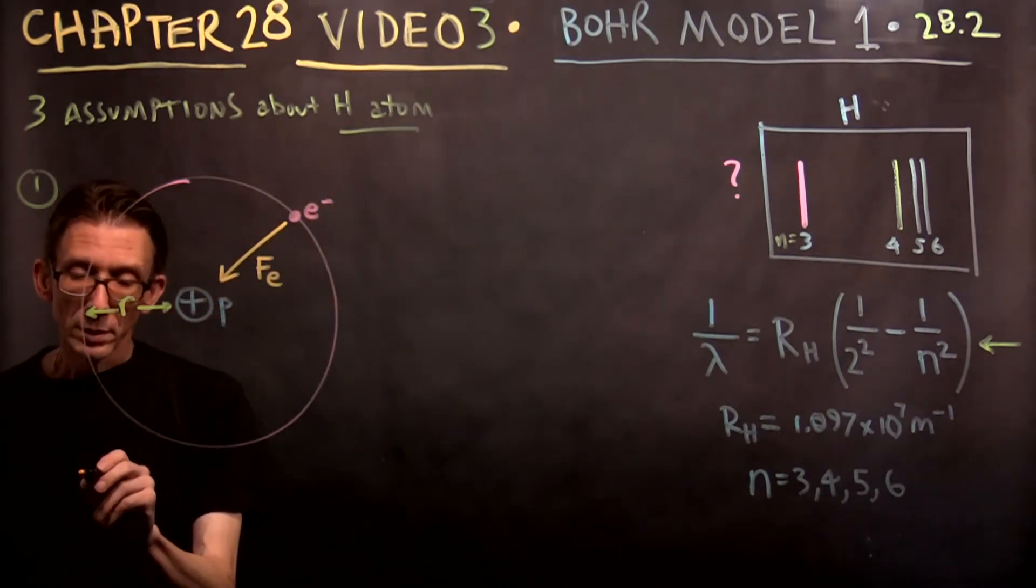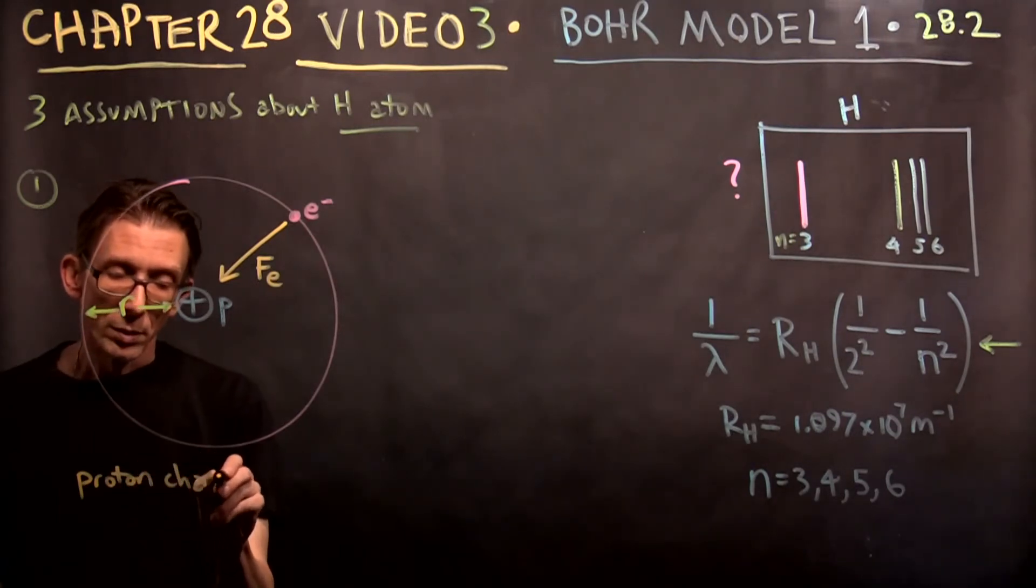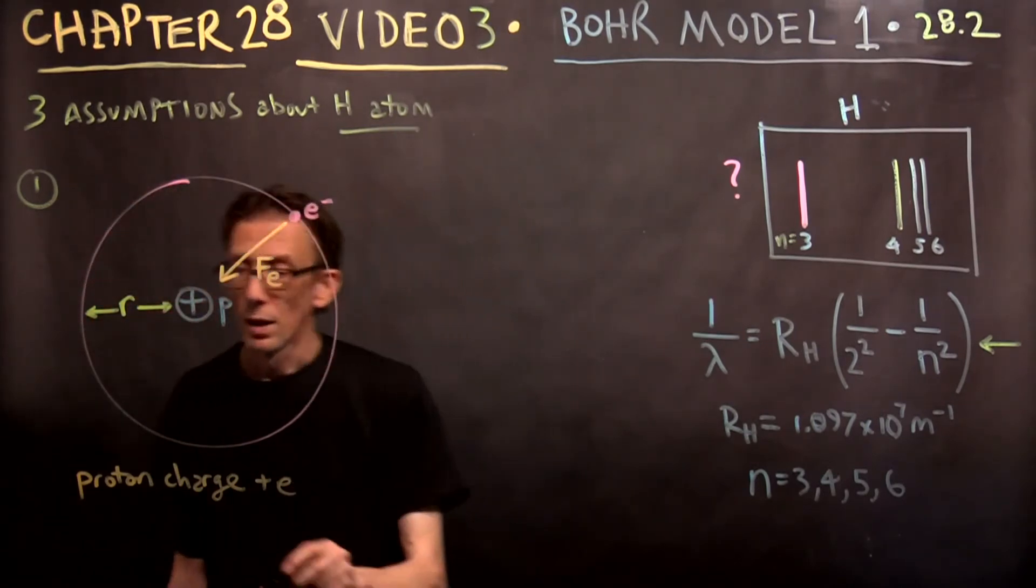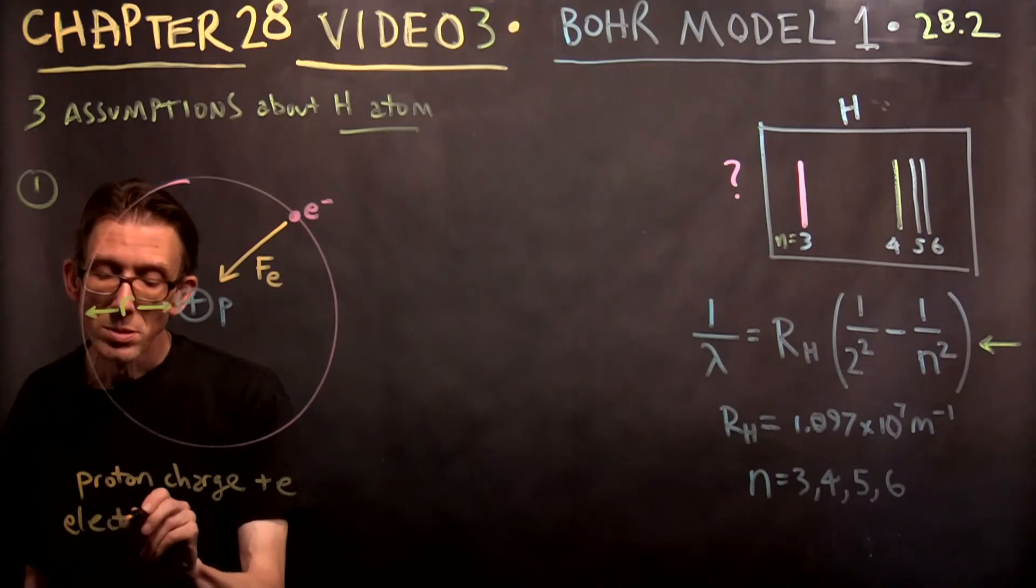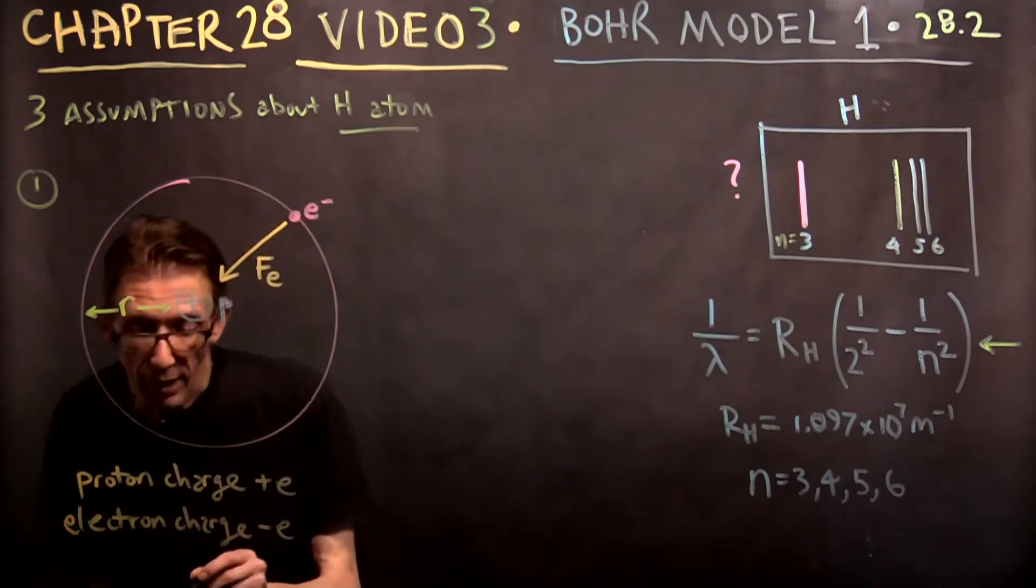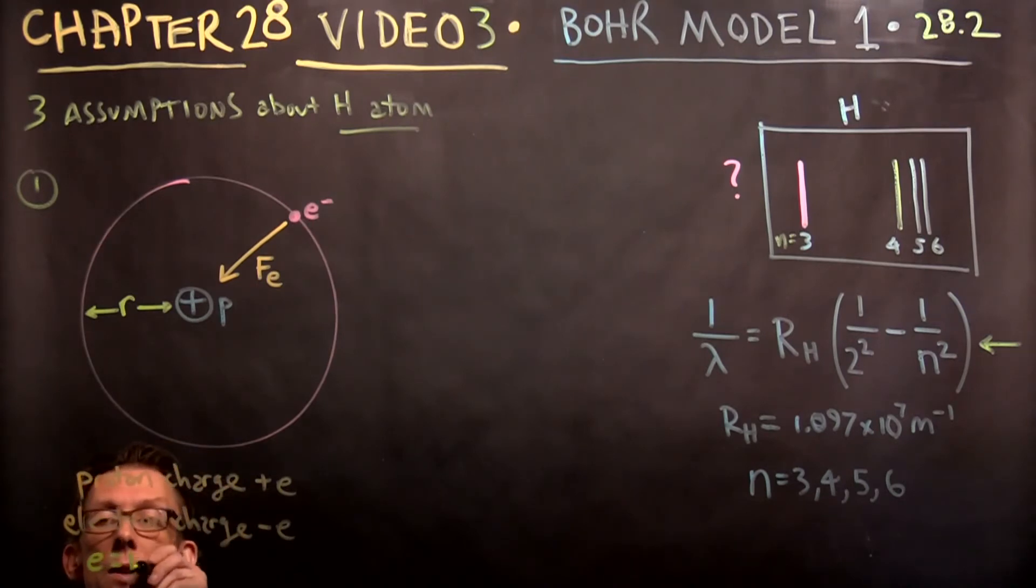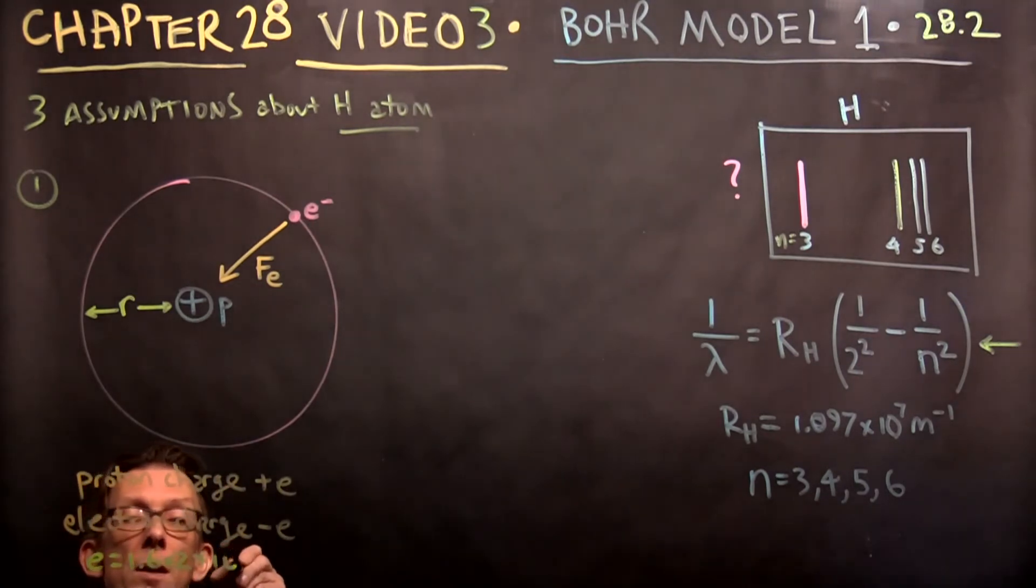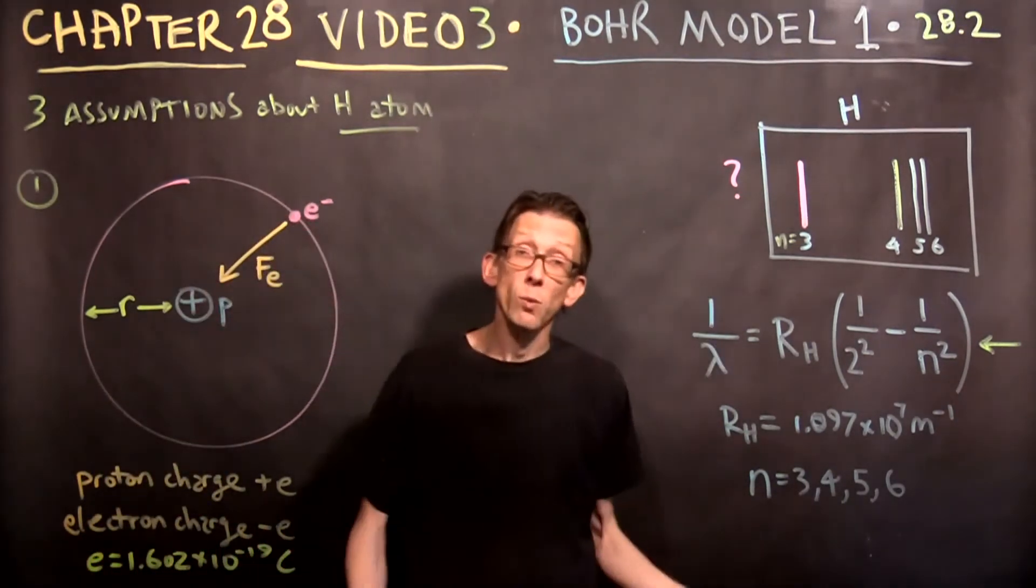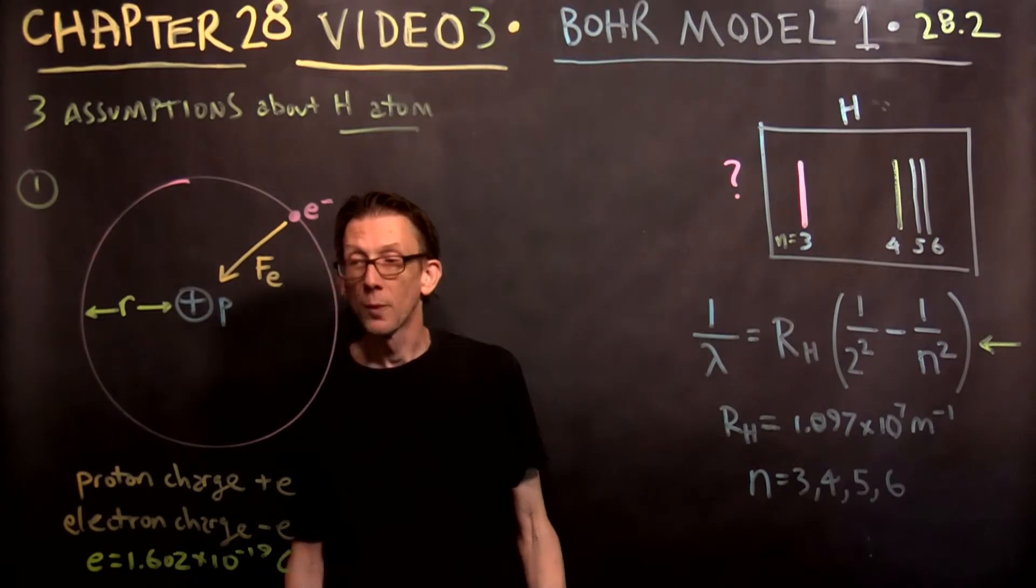plus E. The electron charge minus E. Where E is 1.602 times 10 to the negative 19 Coulombs, as we know from the first half of class, when we all sat in the same room with each other before all of this happened. So those are the charges.